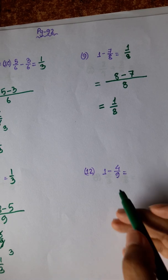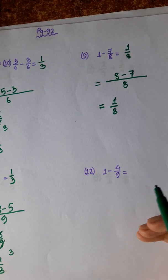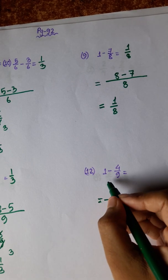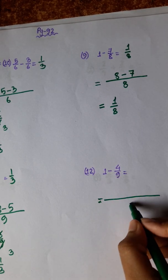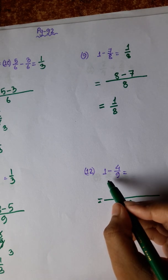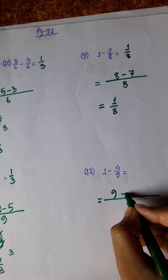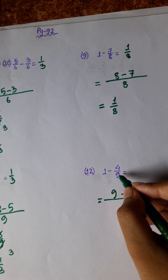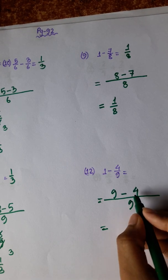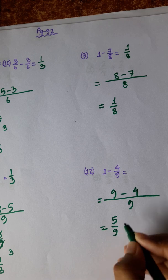And last: again a whole integer minus a fraction. We write 1 with denominator 9, same LCM. 1 into 9 equals 9; 9 divided by 9 equals 1, and 1 into 4 equals 4. So 9 minus 4 equals 5. The answer is 5 by 9.